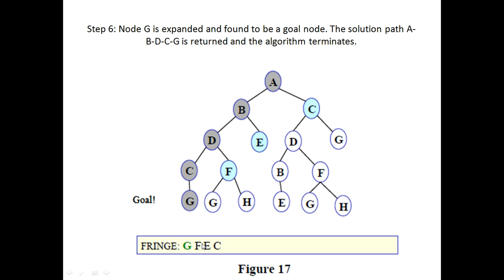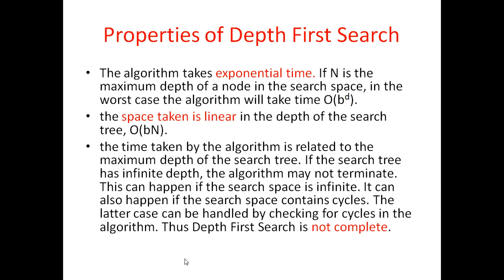Properties of depth first search: the algorithm takes exponential time, O(b^d), where b is the total number of nodes and d is the depth in the search space. The space taken is linear, O(b*n).